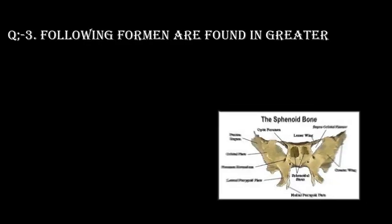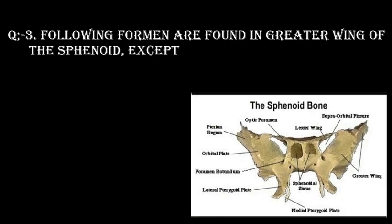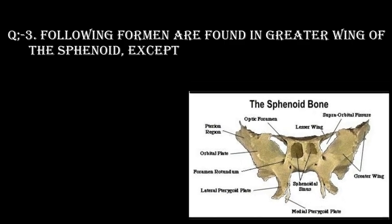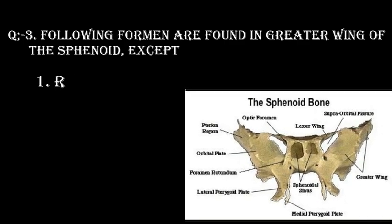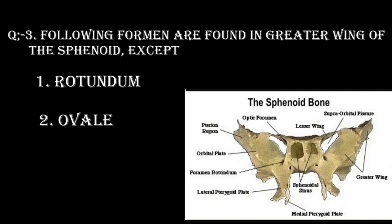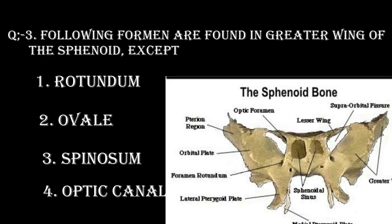Question number 3. Following foramina are found in the greater wing of the sphenoid, except. Option 1: Rotundum. Option 2: Oval. Option 3: Spinosum. Option 4: Optic canal.